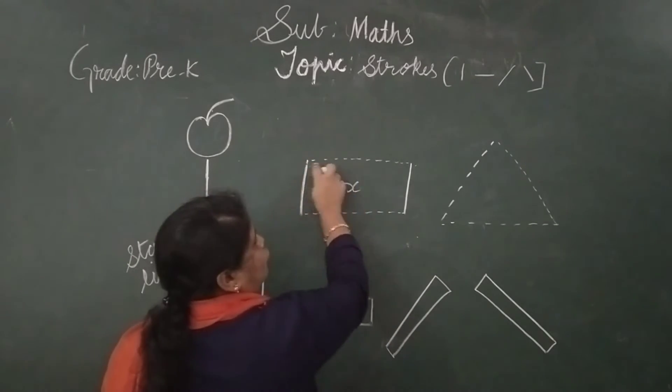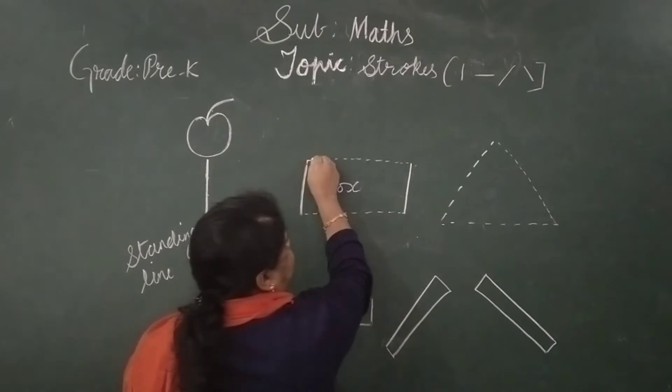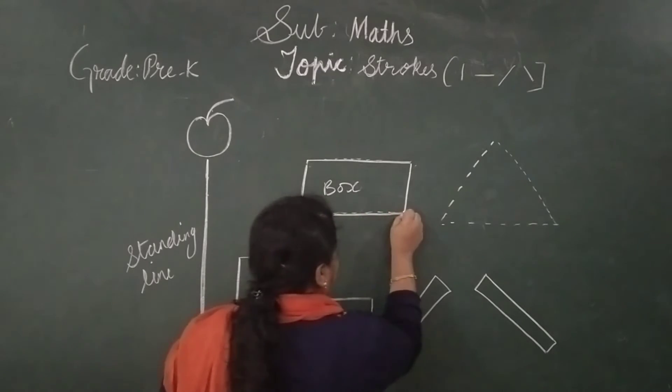Now you have to, if we join this dot, what do we get? See, this is sleeping line.